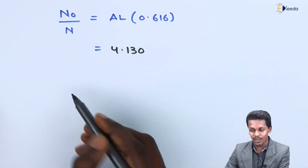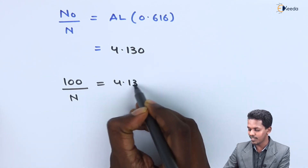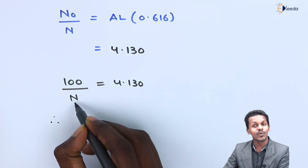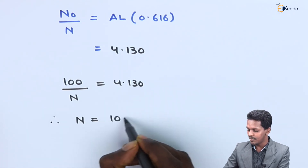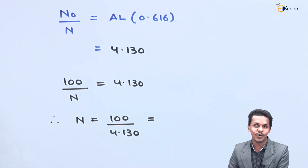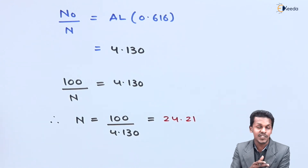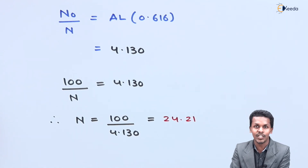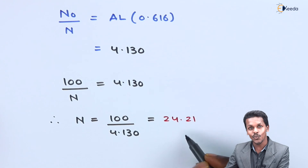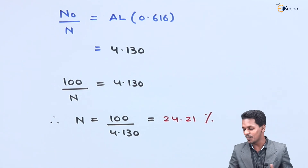This value 4.130 is the ratio N₀/N. Since we assumed N₀ = 100, we have 100/N = 4.130, so N = 100/4.130 = 24.21. Since the initial number of nucleons was taken as 100%, after the decay, 24.21% of the sample remains undecayed. That is our answer.